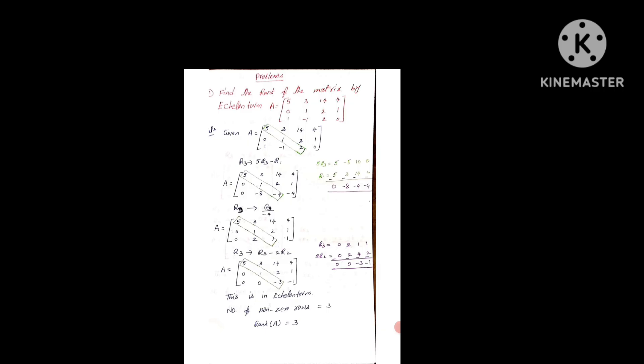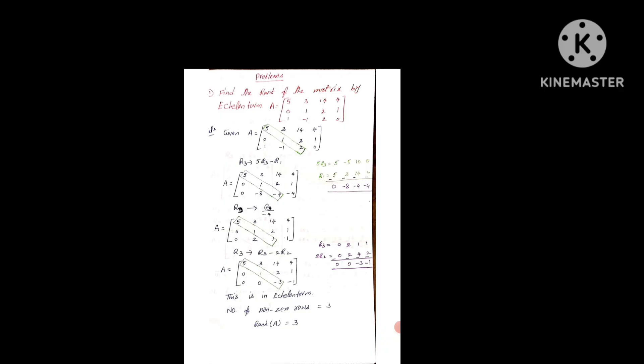Next we have to make the element below the principal diagonal zero — the element 2 should become 0. So R3 changes to R3 minus 2R2. Here I have done the side calculation clearly: R3 is [0, 2, 1, 1], and 2 times R2 is [0, 2, 4, 2]. Subtracting gives [0, 0, minus 3, minus 1]. We get the next matrix: [5, 3, 14, 4 / 0, 1, 2, 1 / 0, 0, minus 3, minus 1].